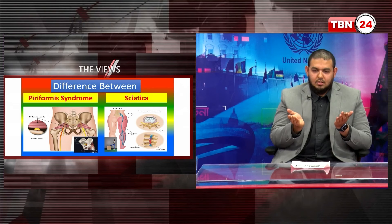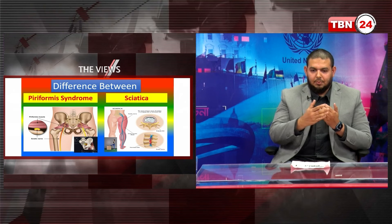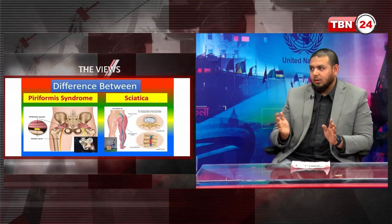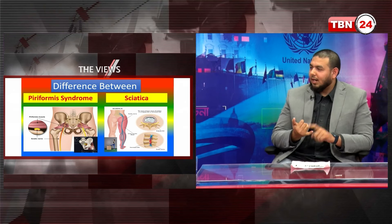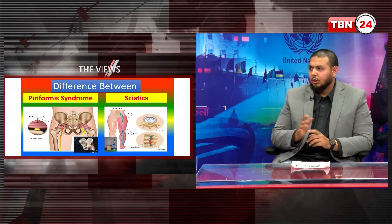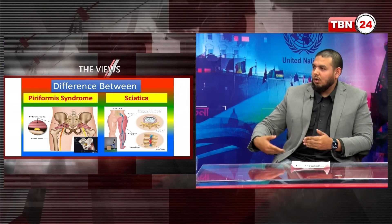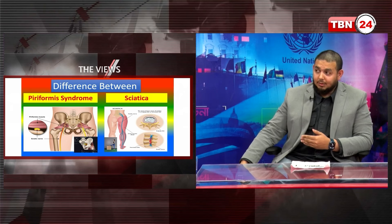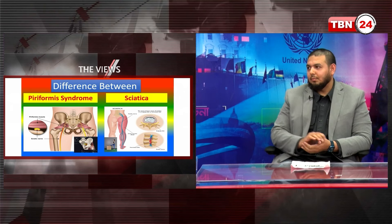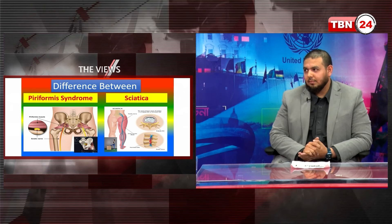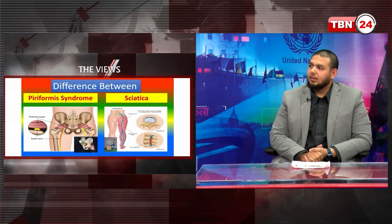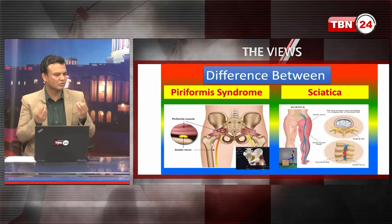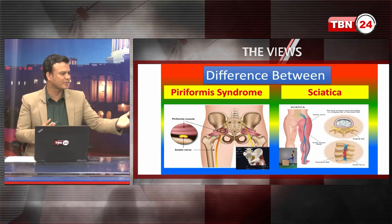When the piriformis muscle is inflamed or constricted, you can see nerve constriction. You can see the pain from piriformis syndrome. When you are inflamed, you can see the pain — the burning pain, the stinging pain. But the pain is not too low, below the knee.